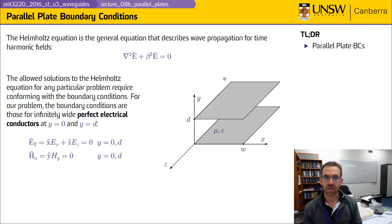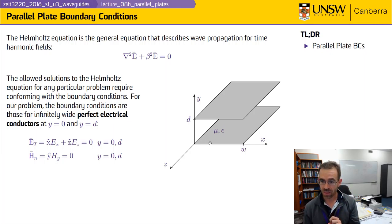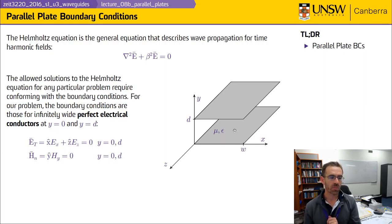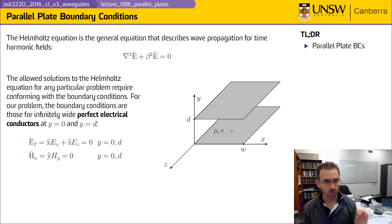For the problem we're working on right now, those are parallel plates. We're going to assume we have two perfect electrical conductors separated by a distance d, with width w. We're going to make the assumption that d is small compared with w, and also small compared with the length of the guide. We're going to assume that the materials are simple: lossless, linear, isotropic, homogeneous.